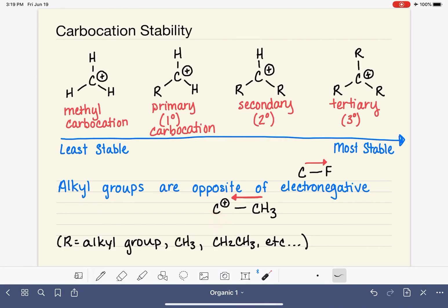And so pushing that negatively charged electron density towards the positively charged carbon helps to stabilize the positively charged carbon. And it makes it less positive. And the more alkyl groups you have pushing electron density in towards that positively charged carbon, the happier that that carbon gets. And so this is why having an alkyl group increases stability. And the more alkyl groups that you have, the more stable the carbocation becomes.